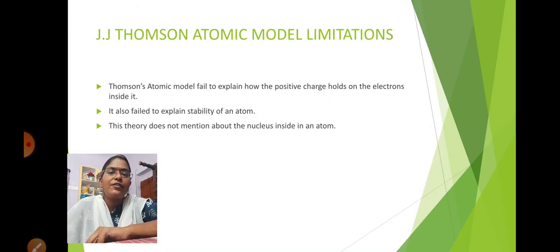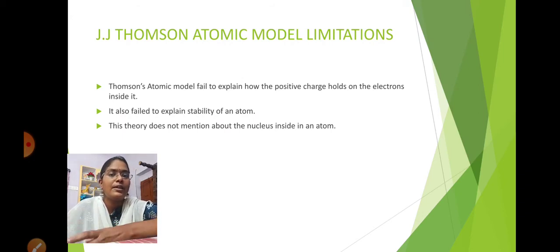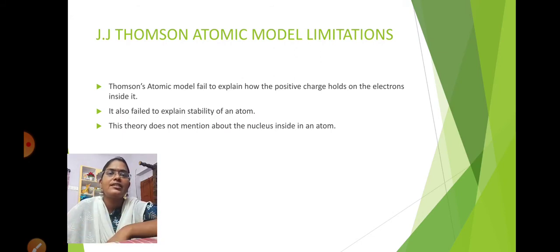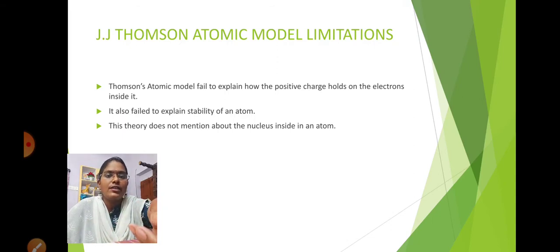The drawbacks of J.J. Thomson's Atomic Model: it failed to explain how the positive charge holds the electrons in place, failed to explain the stability of an atom, and did not mention the nucleus or define what the positive charges actually are.